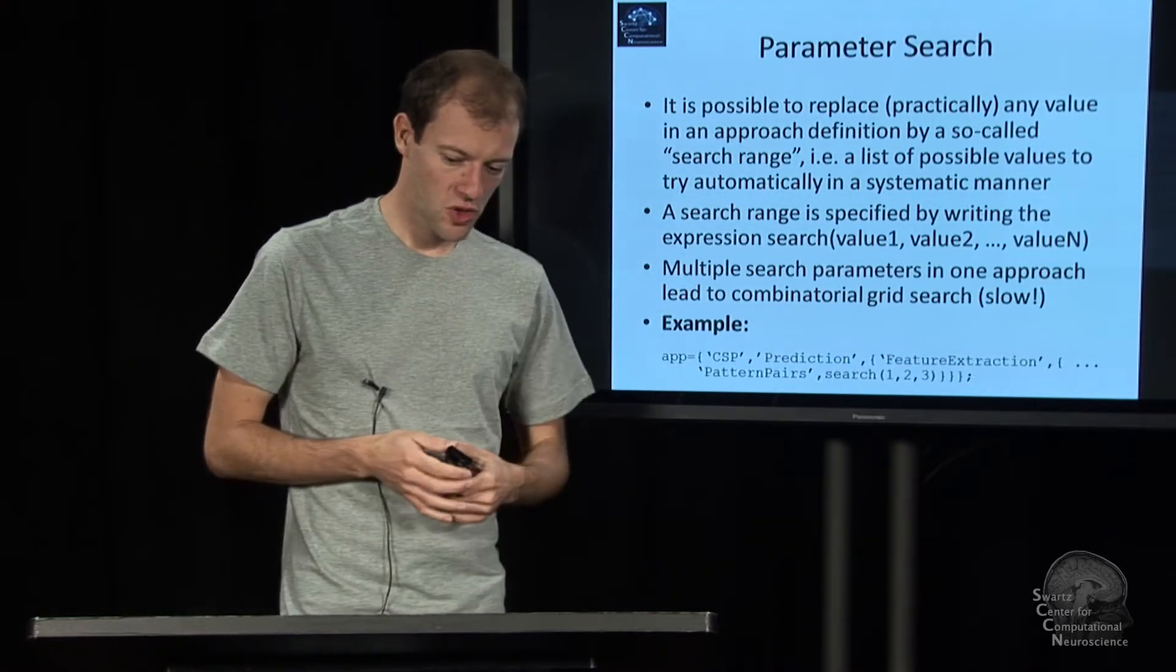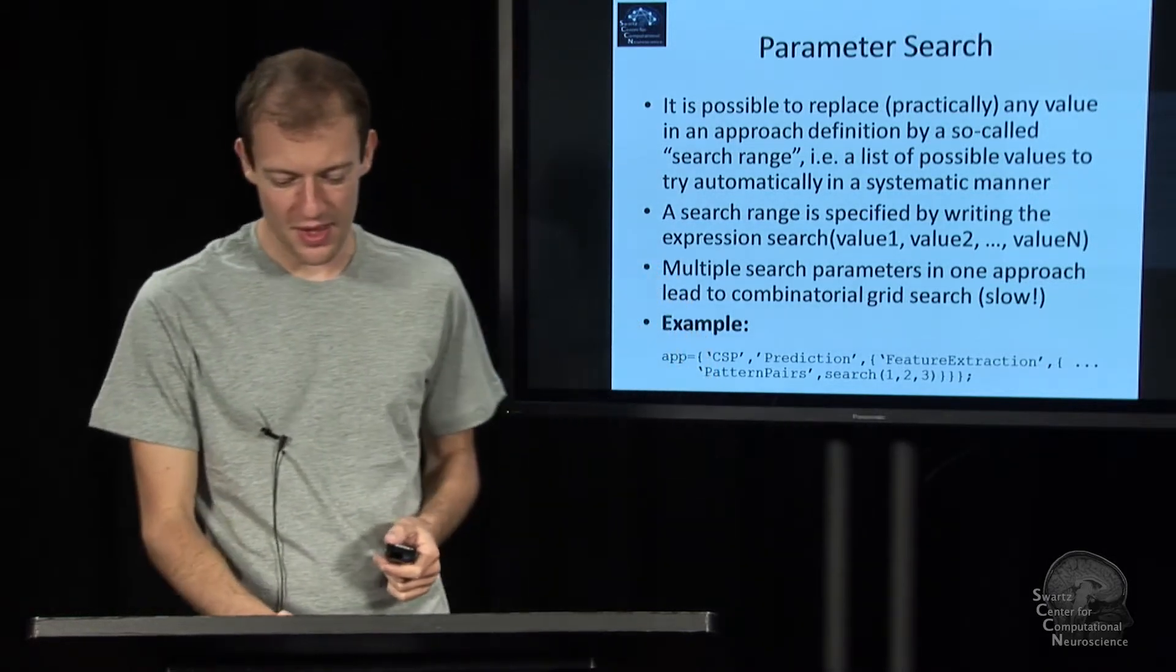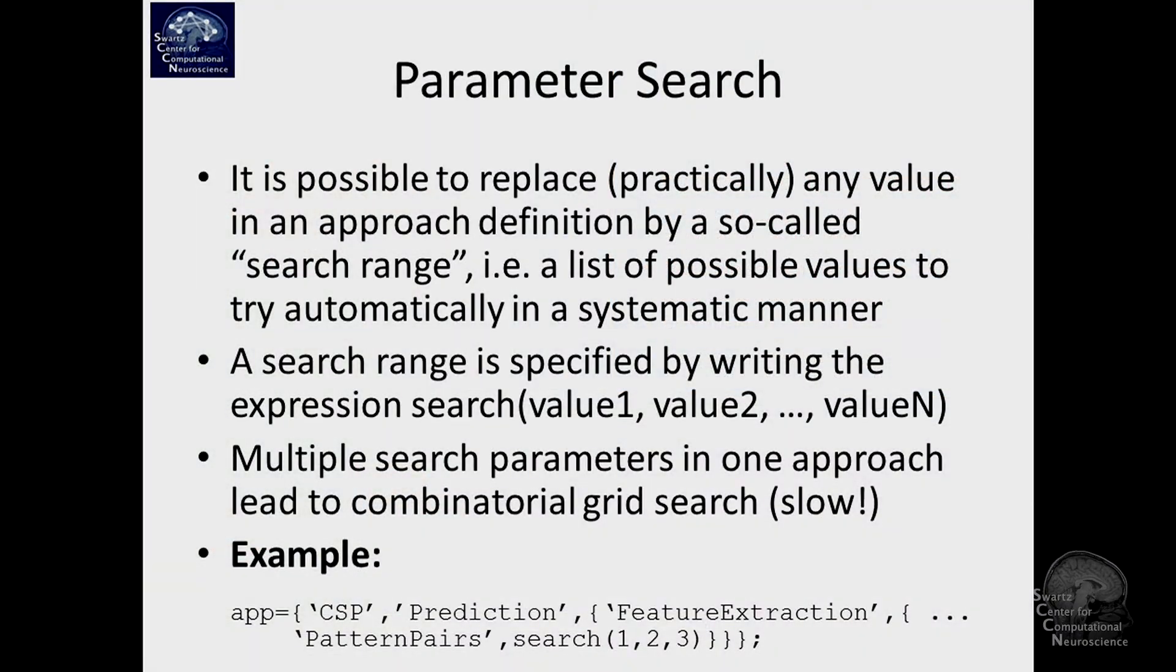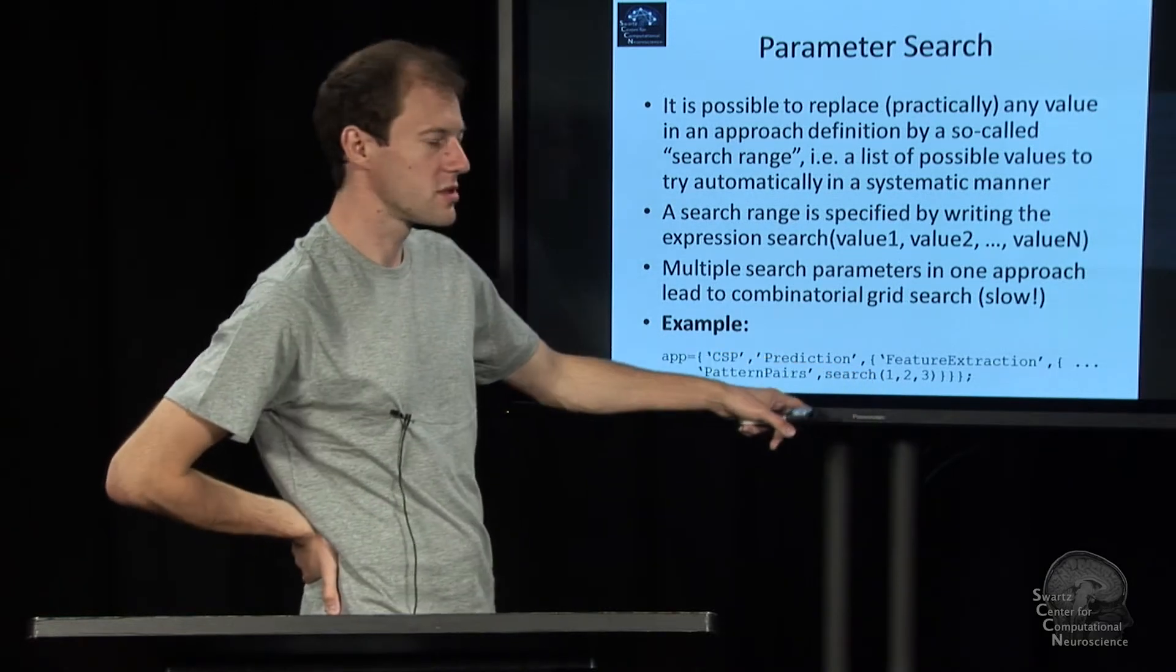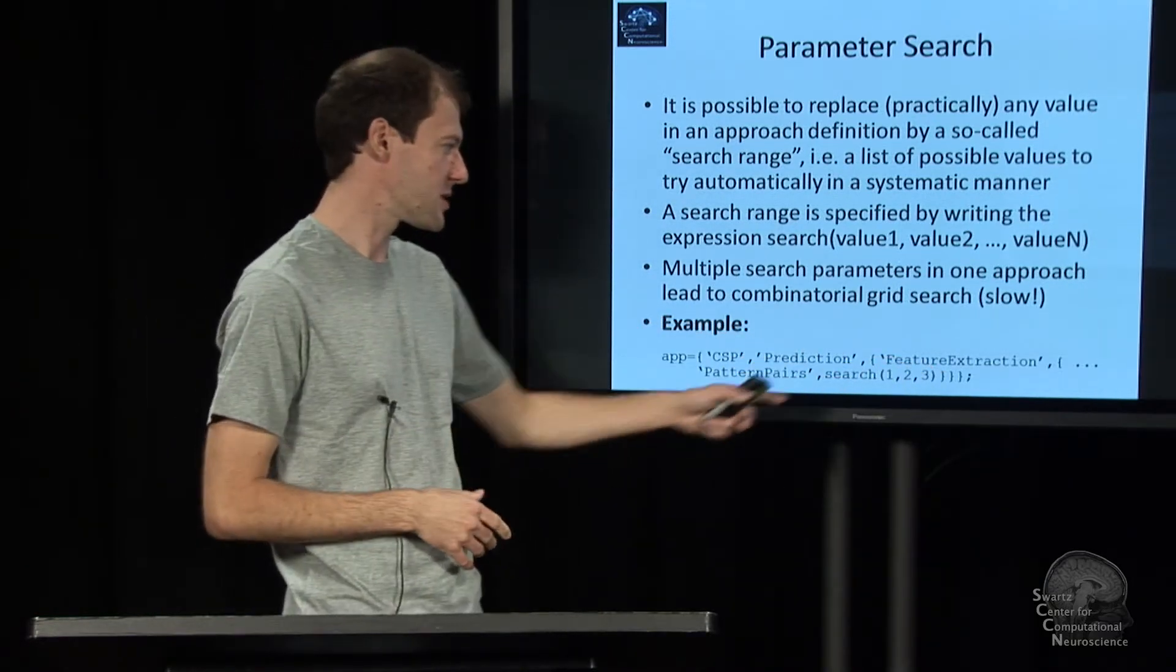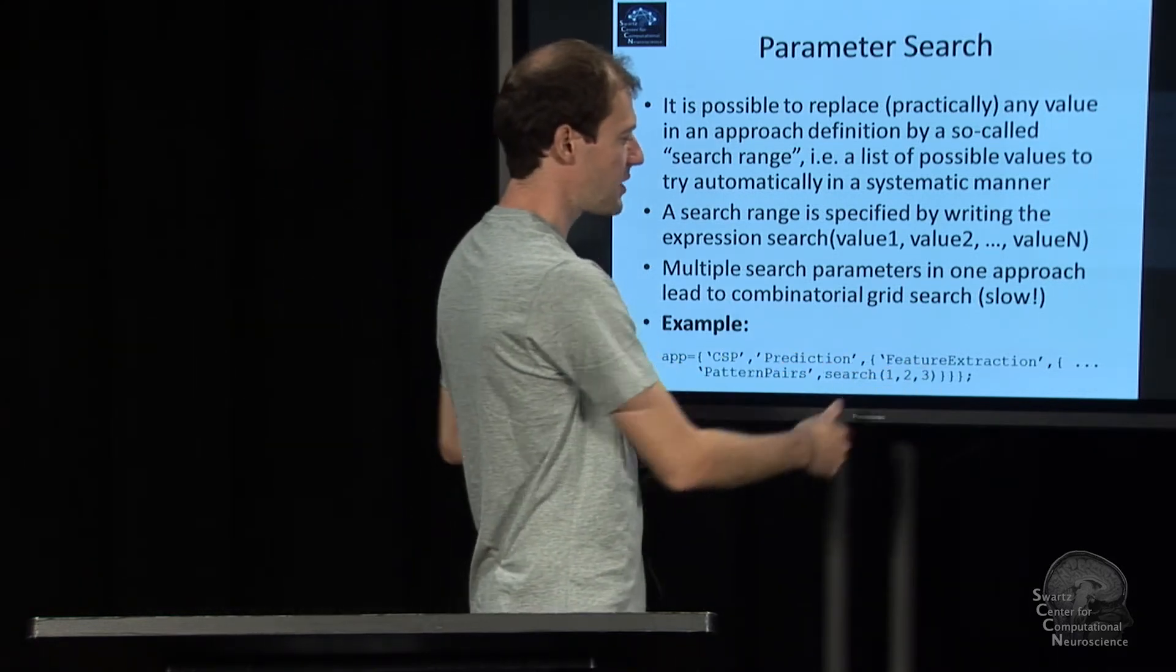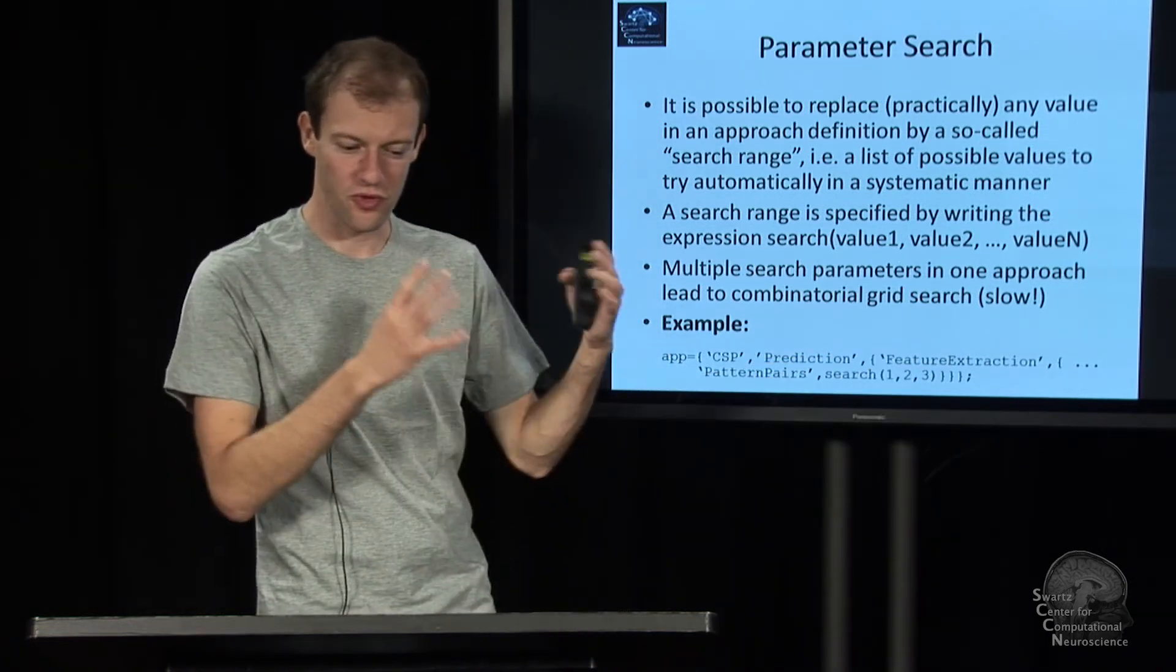And the last trick that you can apply is this conundrum of the parameter search. So I've in many occasions said some methods have tunable parameters, like a lambda or so. And you don't in advance know which value to use. You basically want the toolbox to search over all possibilities and find the right one using cross validation and so on. There's a relatively simple syntax where you can directly in an approach definition say, this parameter, say, pattern pairs. I don't want to use a number here like five. I want to search over multiple possibilities, or I want to have the toolbox search over multiple possibilities. And it's just a search clause. You say search, and then you can list all the possibilities basically. You can also pass an array.